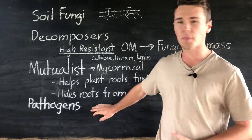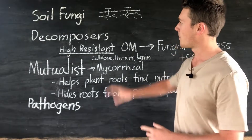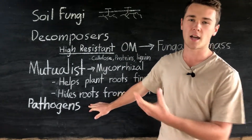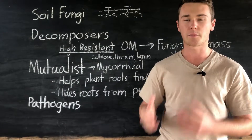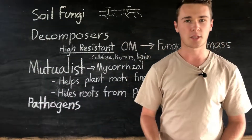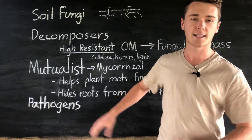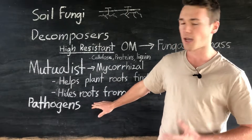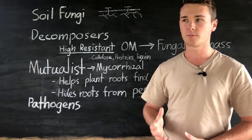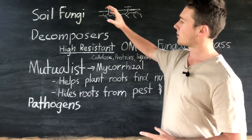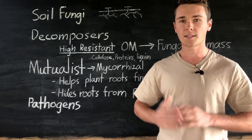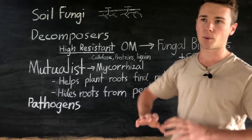The last group are our pathogens. We don't really want these in our soil. Pathogens can cause disease in our plants by decomposing live plant tissue — instead of decomposing dead organic matter, they attack and decompose living plants. This can be combated by increasing biodiversity within our soil, where our good microbes and good fungi will outcompete these pathogens, as well as protecting our plant roots by growing around them.